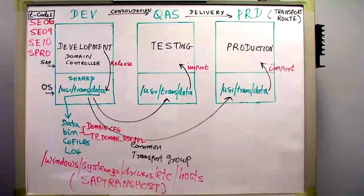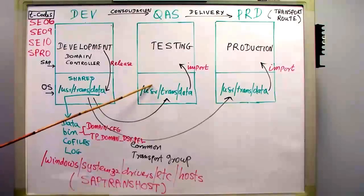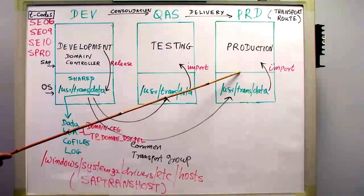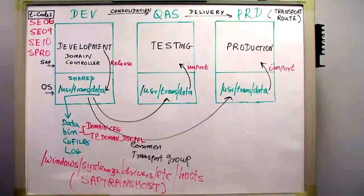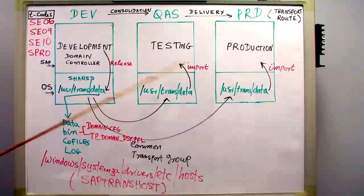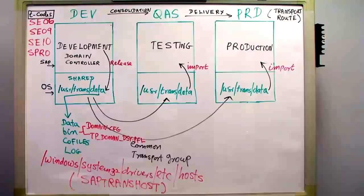To import into the production system, I type STMS in the production system. I can either do it from the testing system itself or log into the production system through SAP GUI. Then I adjust and import, and the transport will be loaded from the shared directory in the development system because all systems belong to the same transport group.